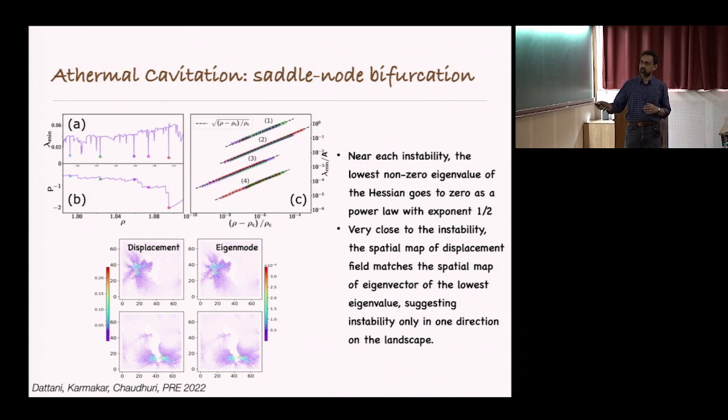What is interesting is that since you have this kind of square root singularities, the eigenmodes that you compute corresponding to this lowest non-zero eigenvalue actually predicts very well the displacement that is actually happening as you are going towards the singularity.